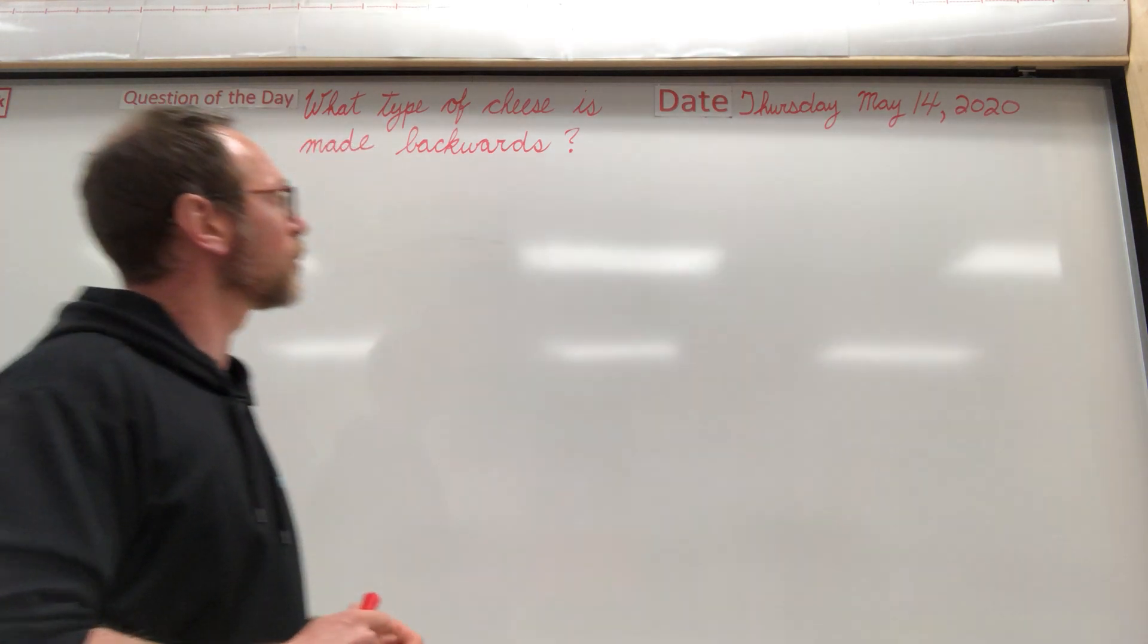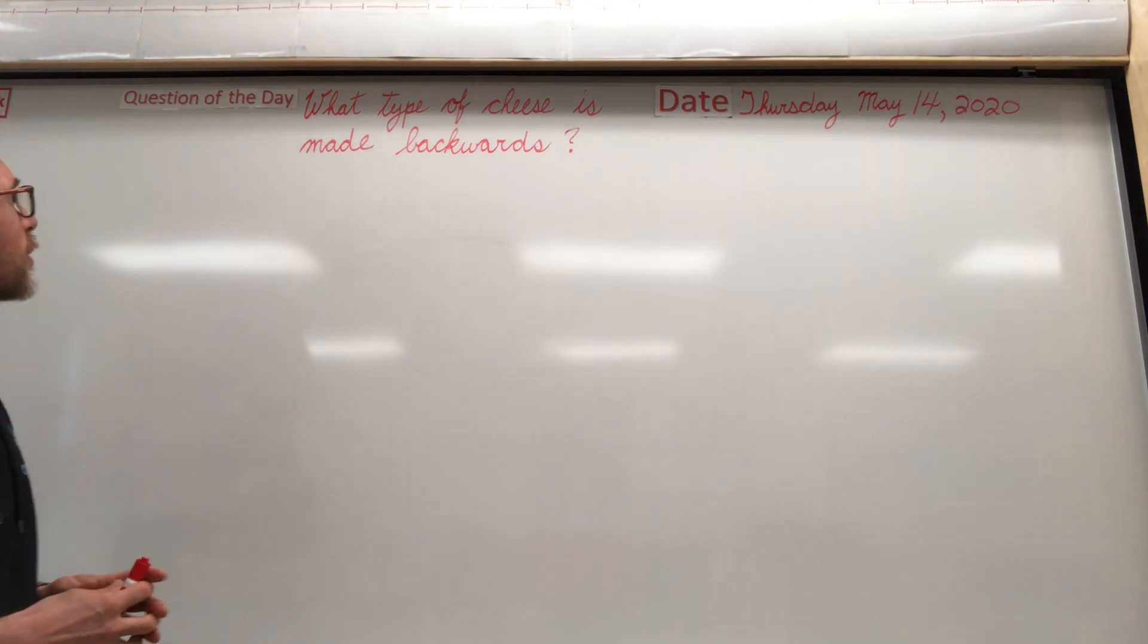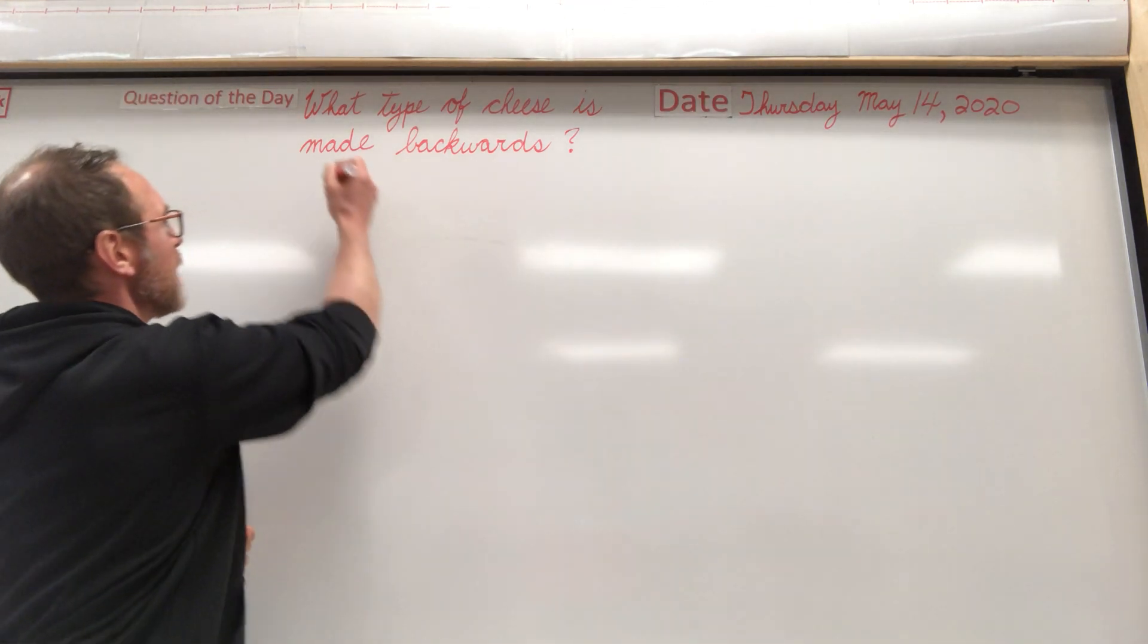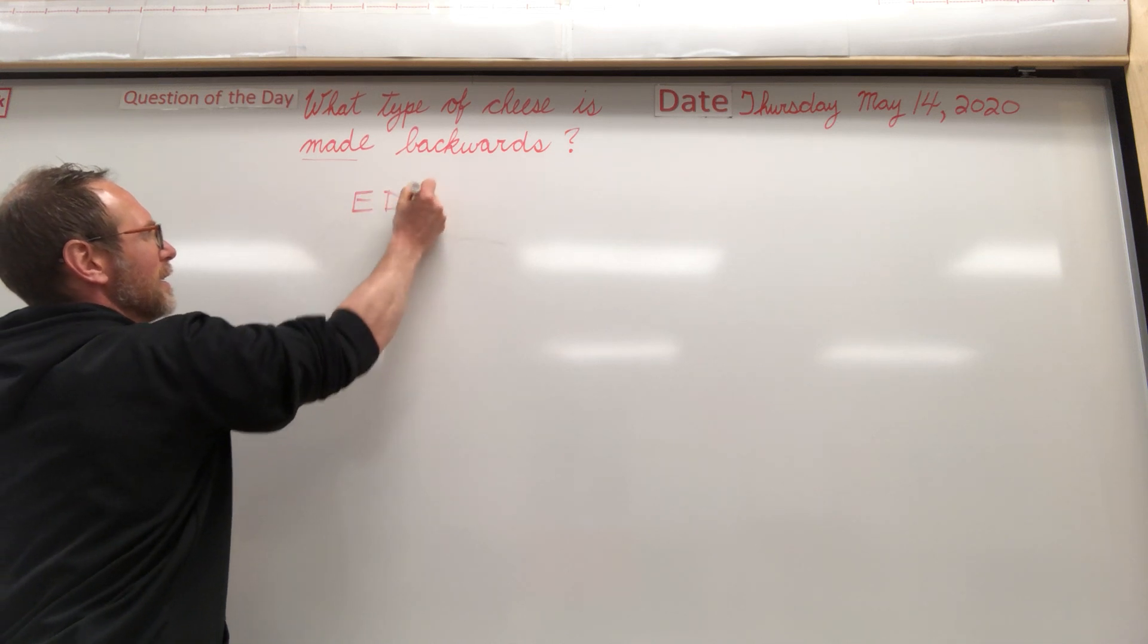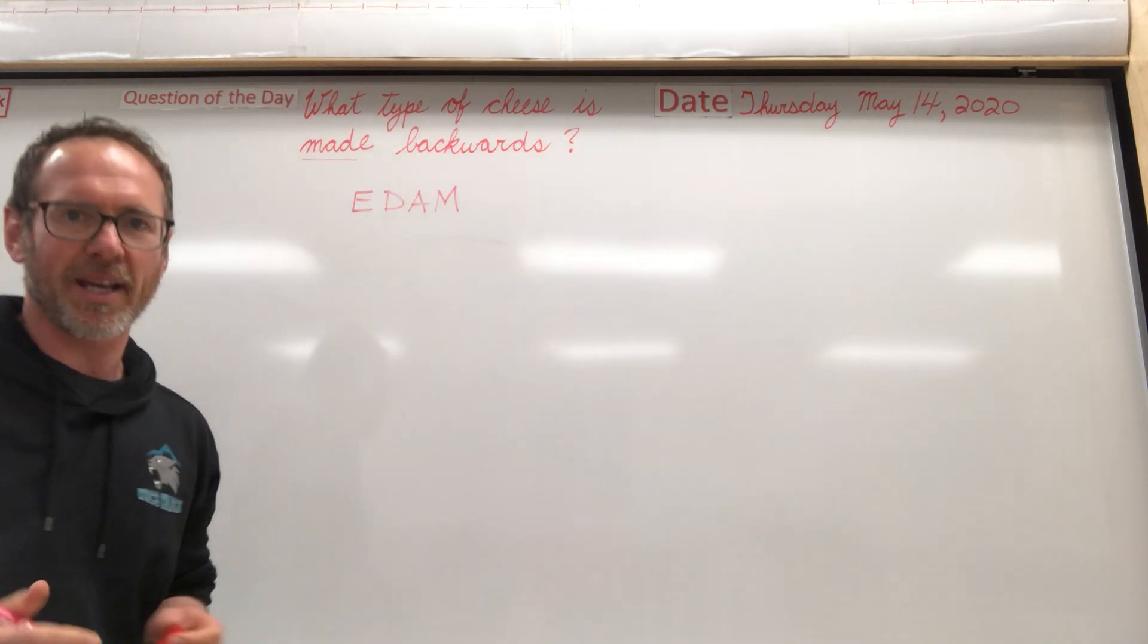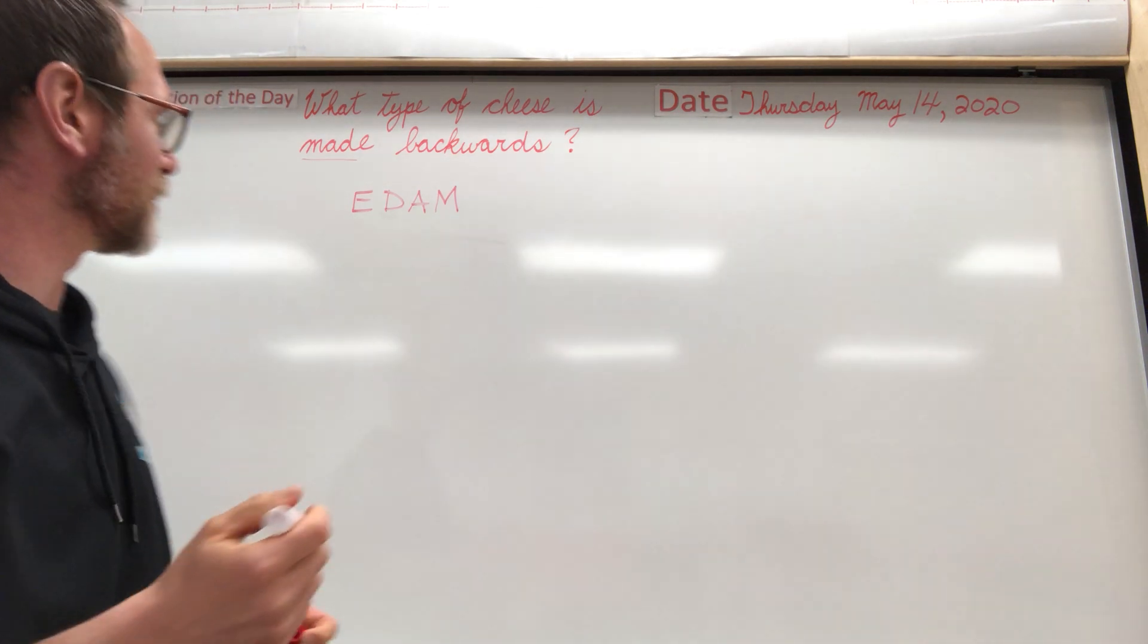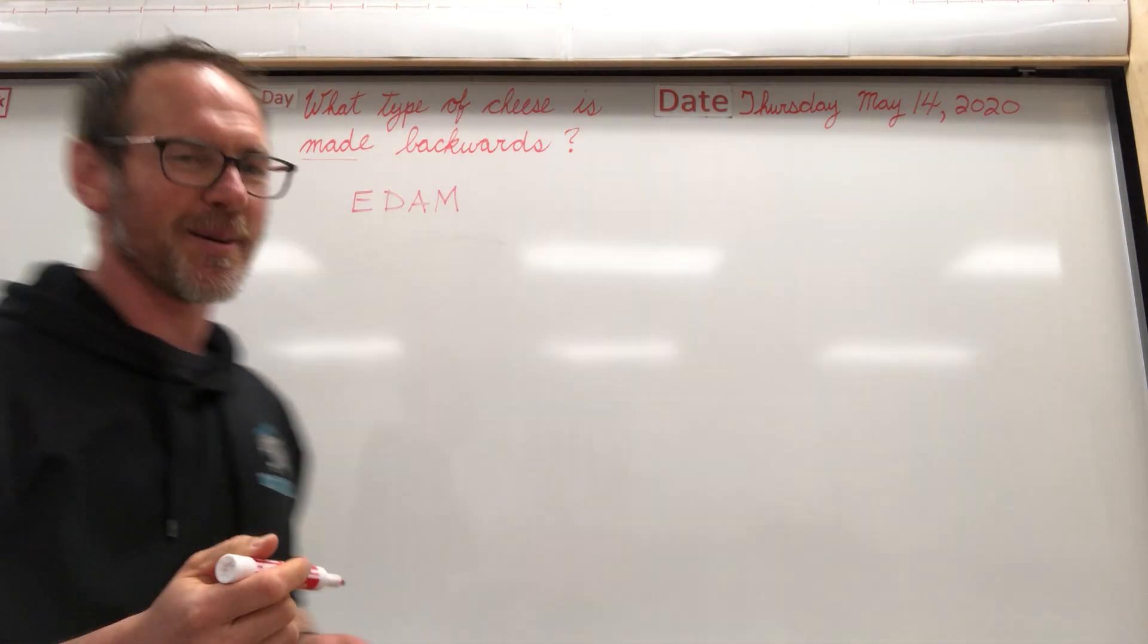We're gonna finish the week with the question of the day. It says, what type of cheese is made backwards? Well, the word 'made' backwards is Edom, and Edom is a type of cheese. It's made backwards.